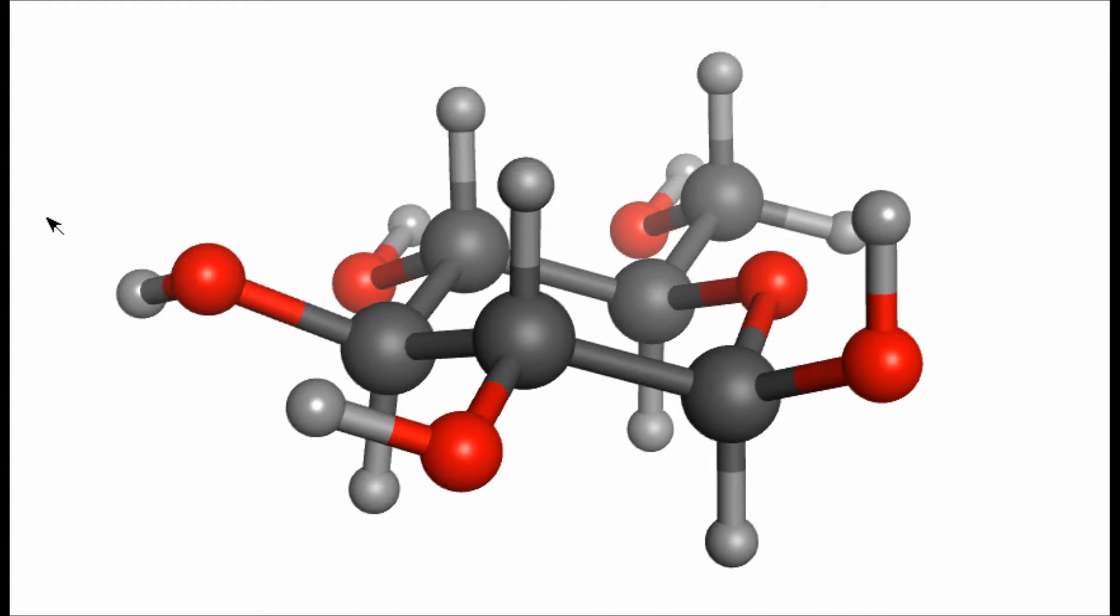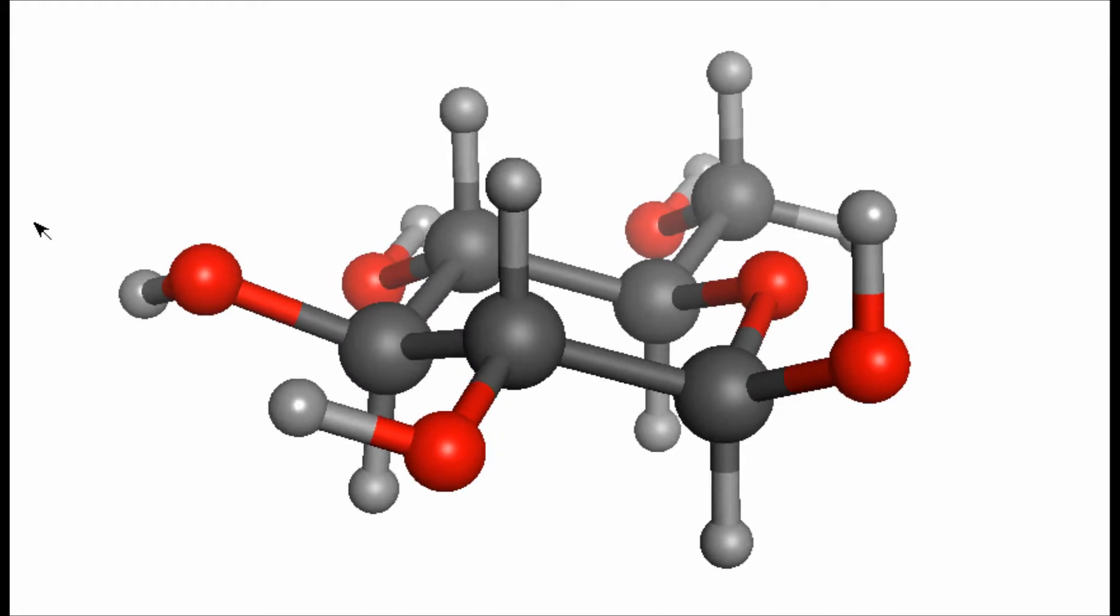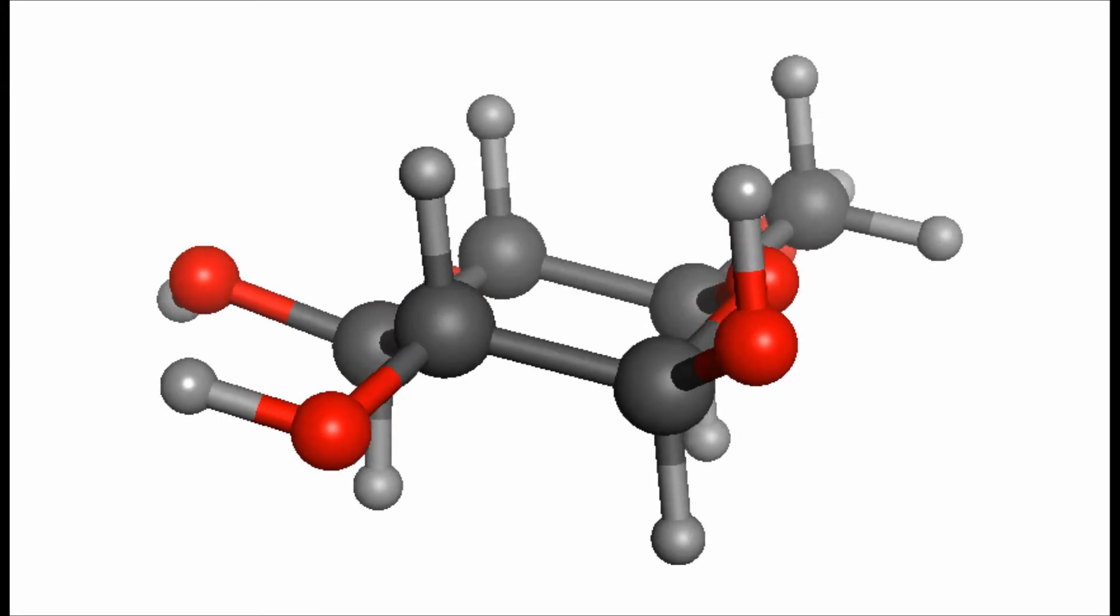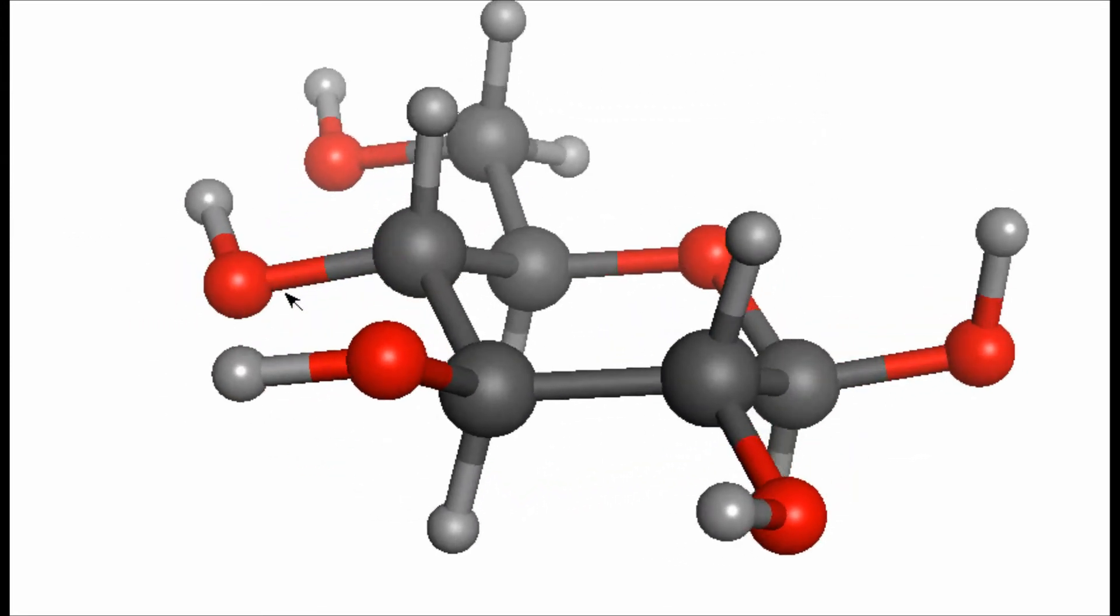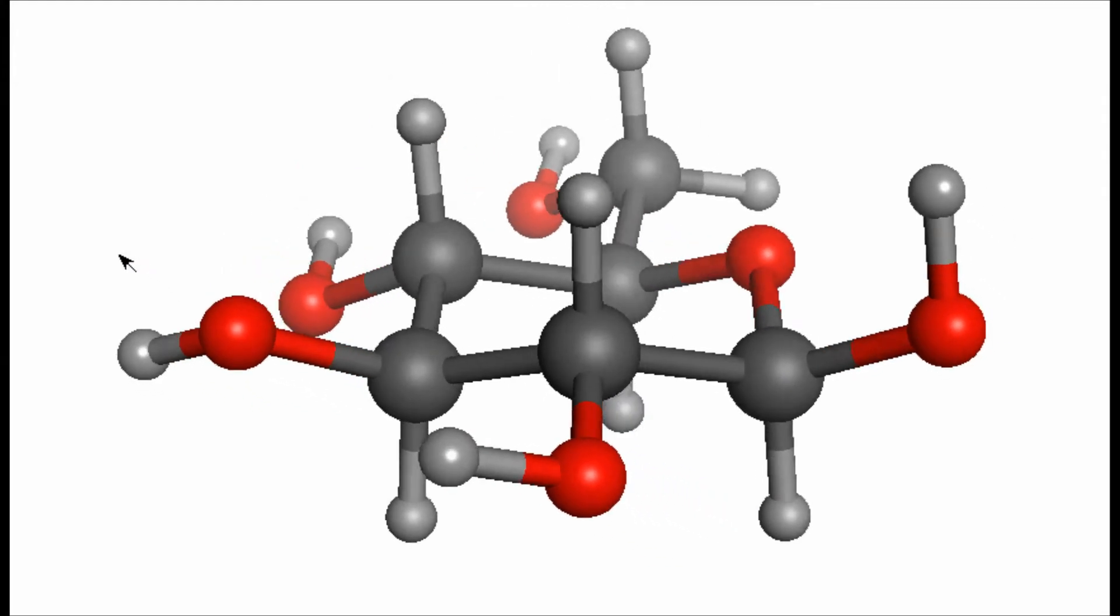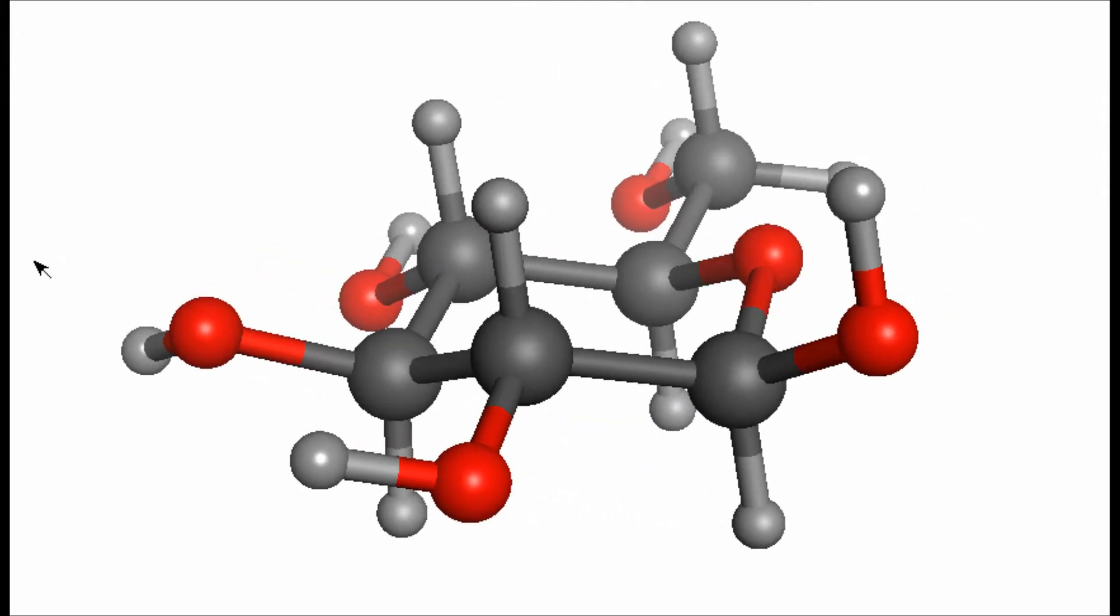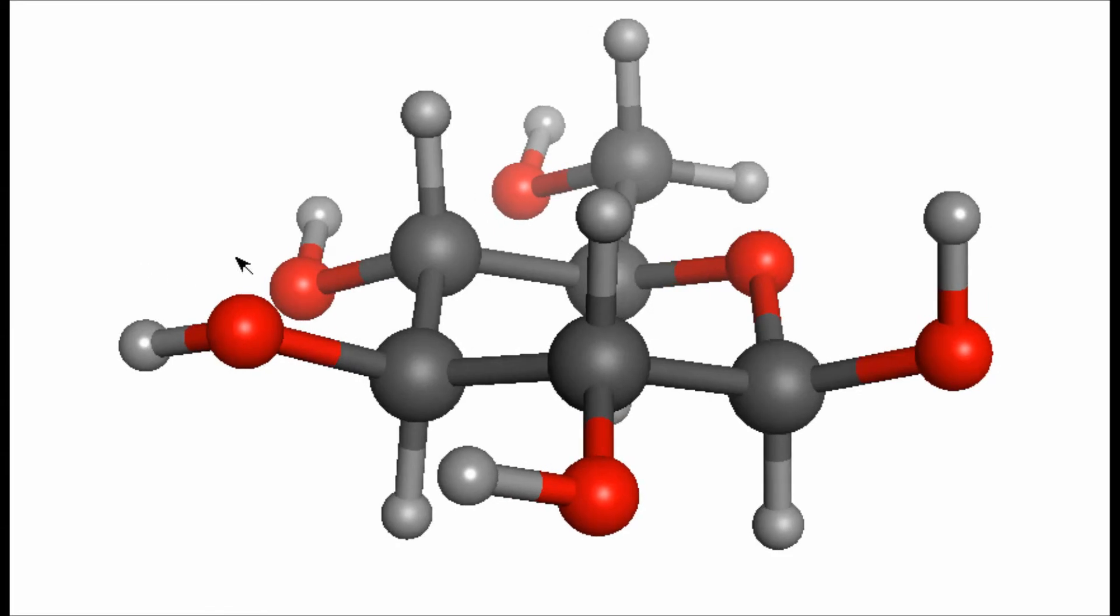Okay, what we've got here is the ring closed form of the beta anomer of glucose. Things to note about this: the six membered ring pyranose part of the molecule is fused now.